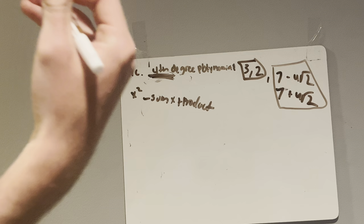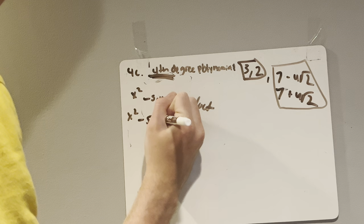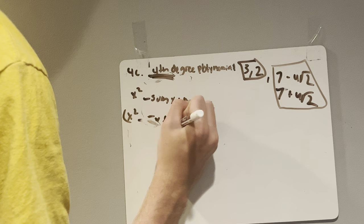For simplicity's sake, I'll use our easier numbers first. x squared minus the sum of 3 and 2 is 5, so that's 5x, and the product of 3 and 2 is 6. So we have x squared minus 5x plus 6.